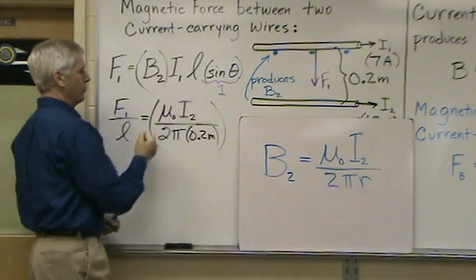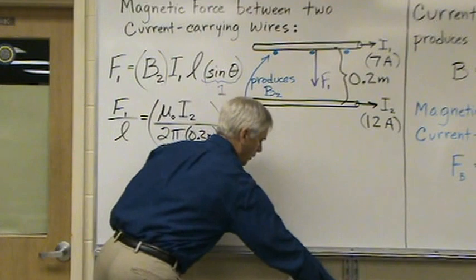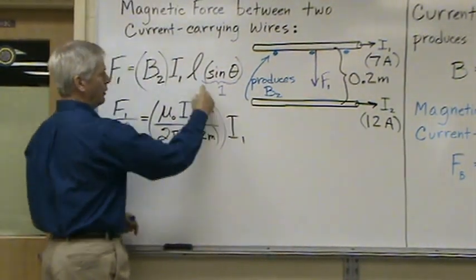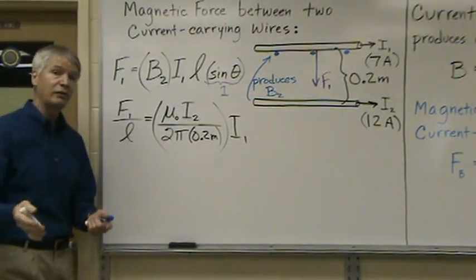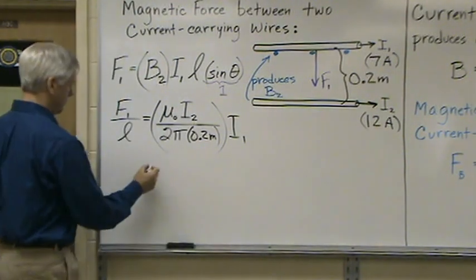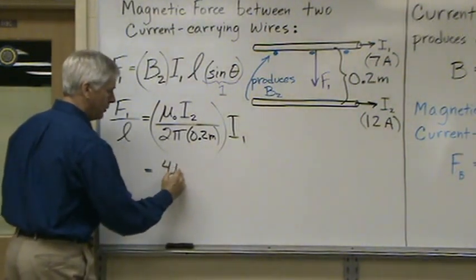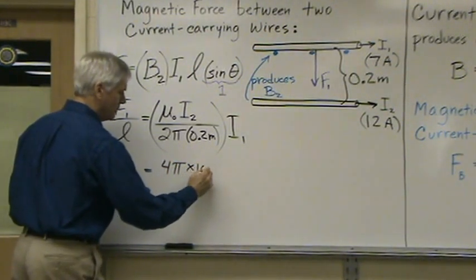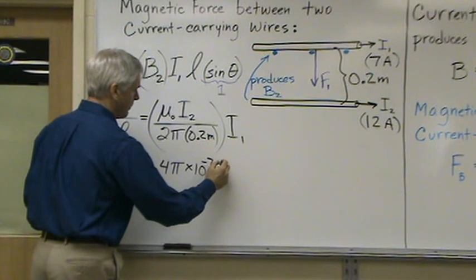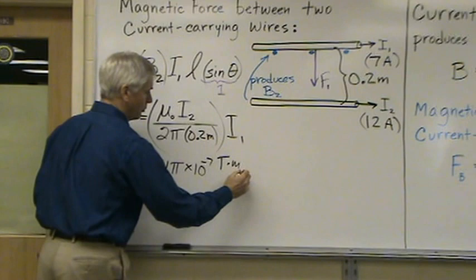So this is term B2 using the terms that we're given. We also need I1 and we've already shifted L to this side. So if we put the numbers in place, we can then calculate the magnitude of that force 1. So the permeability constant, the permeability constant is 4π times 10 to the minus 7. The units are a little different. They are Tesla meters per amps.